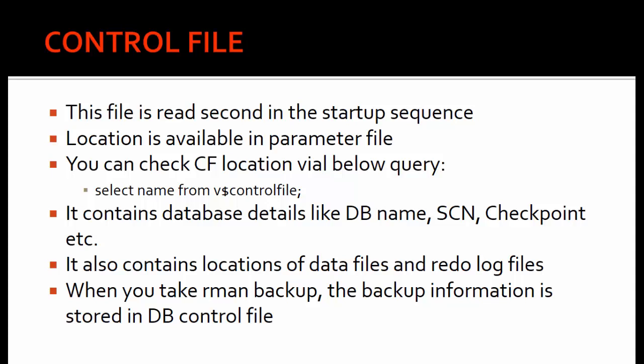The next important file is the control file. This is the file which is read second in the startup sequence — the first file read is the parameter file. The parameter file contains the location of the control files, and from that location in the second stage of the startup sequence, control files are read.